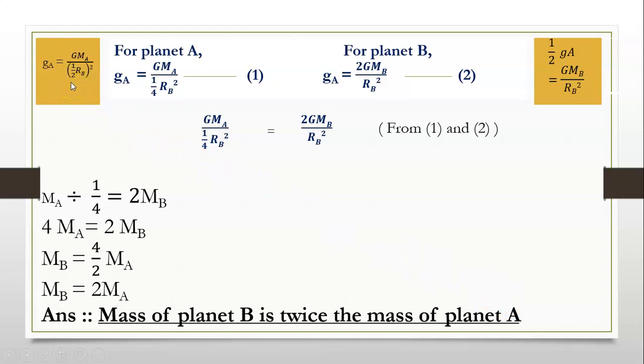I have written the values so that you will be able to connect it to the present values. So for planet A, acceleration due to gravity GA is equal to G into MA, 1 upon 2 whole square becomes 1 upon 4, RB the whole square becomes square of RB. This is your first equation. For planet B, from the previous slide, we have the value half GA is equal to G into MB upon square of RB. So we need only the value of GA. The 2 will go on the opposite side. So we have GA is equal to 2 into G into MB upon square of RB. This becomes your equation 2.